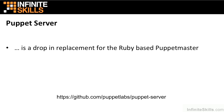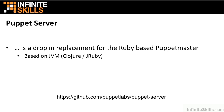The Puppet Master is being deprecated in favor of a product called Puppet Server. The Puppet Server is geared to be a drop-in replacement for the Ruby-based Puppet Master. The big difference is that the Puppet Server is based on a technology stack that uses the Java Virtual Machine — specifically the JVM technologies of Clojure to operate the Puppet Server, and JRuby, which will allow you to use the Ruby-based modules and applications already developed to support Puppet Agents and Puppet Masters.